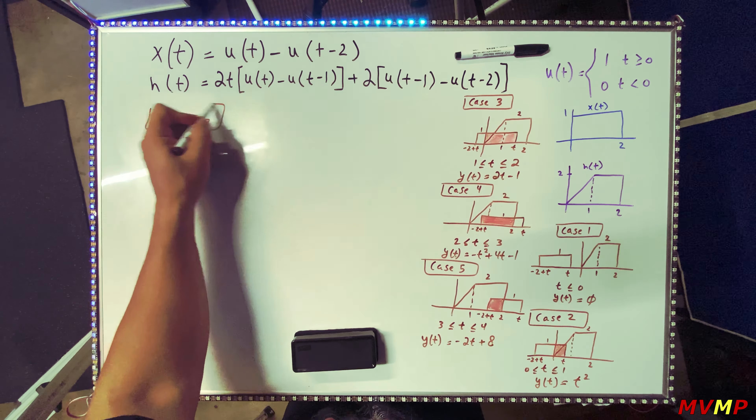The graphical convolution method is simply finding the point of convergence where the impulse response and the shifted input overlap. The shaded red regions represent the integration limits. When they don't overlap — Cases 1 and 6 — y(t) = 0. In all other cases, you integrate over the overlapping region with respect to τ.